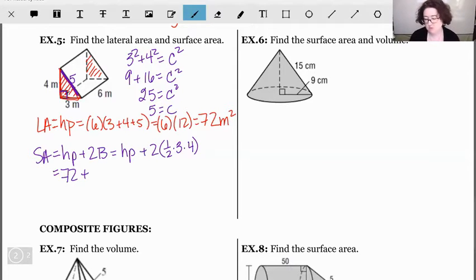I'm going to go ahead and plug in the answer we got for HP, which was 72. Plus I can just multiply them straight out. So 2 times 0.5, those actually cancel each other out. So we really need just to do 3 times 4, which is 12. And so 72 plus 12 gives us 84. Again, it's an area. So meters squared. And so think about that. Your lateral area is just supposed to be the sides. Surface area is everything. So surface area should always be the larger value.